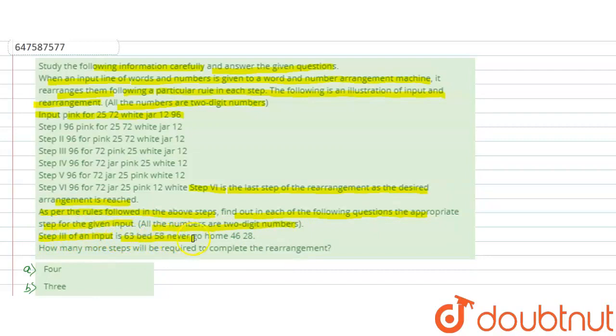All the numbers are two digit numbers. Step 3 of an input is: 63 bad 58 never go home 46 28. How many more steps will be required to complete the rearrangement? This is a machine input question.